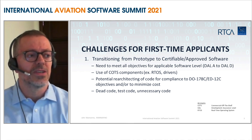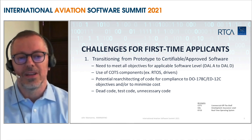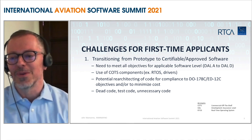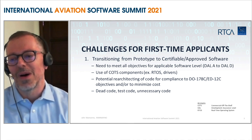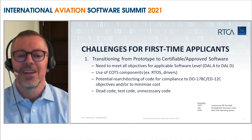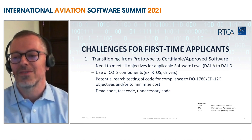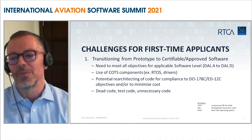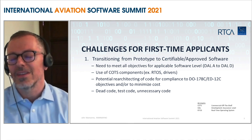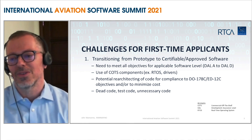No matter how you started on your project, at the end of the day you will have to meet all the objectives for your software design assurance level. As anyone knows who has picked up DO-178 or ED-12C, the number of objectives you have to comply with varies per design assurance level, with DAL-A being the most stringent. Those objectives apply to things like software requirements — high level and low level — architecture definition, code coverage, and traceability. There are a lot of hoops you have to jump through to convince the aerospace community that your code is safe.